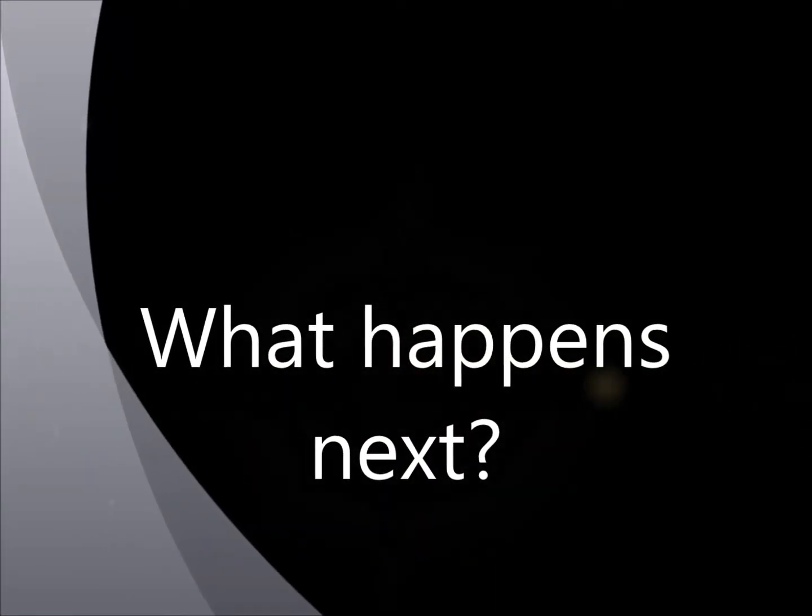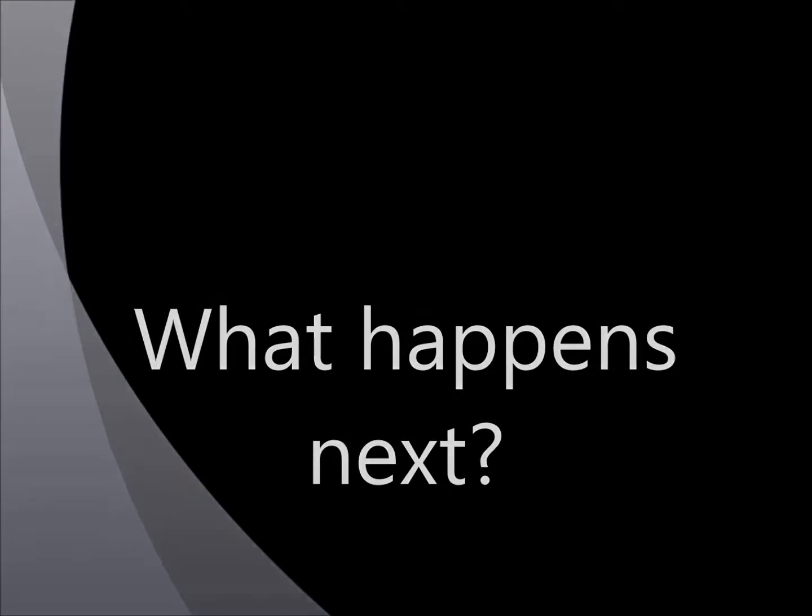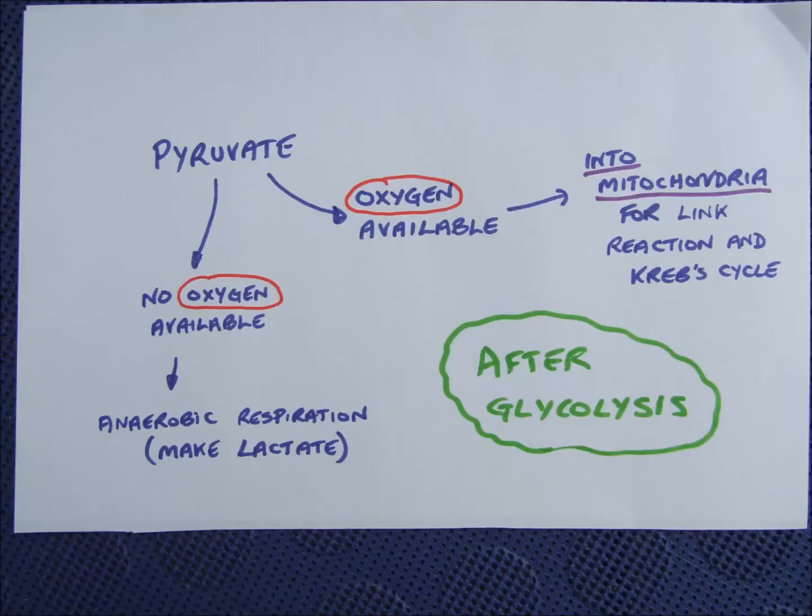What happens to the pyruvate after this depends on whether there's enough oxygen in the cell for oxidative phosphorylation. If there is a plentiful supply of oxygen, the pyruvate is moved into mitochondria and the link reaction and then the Krebs cycle are carried out. If there is insufficient oxygen, then we get anaerobic respiration where the pyruvate is converted to lactate.